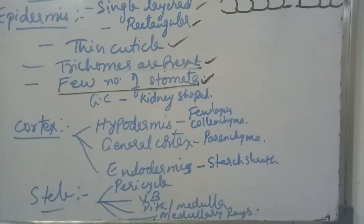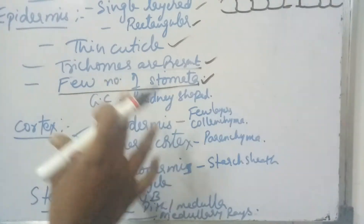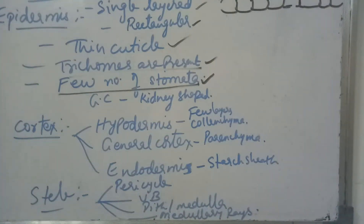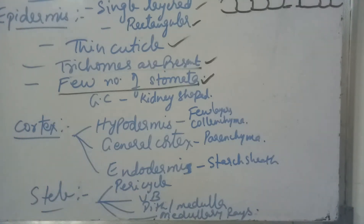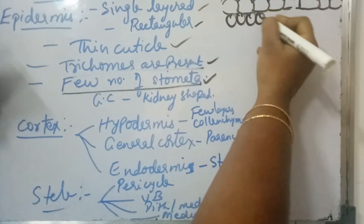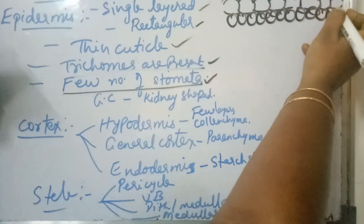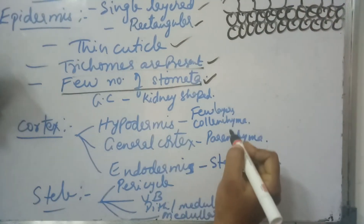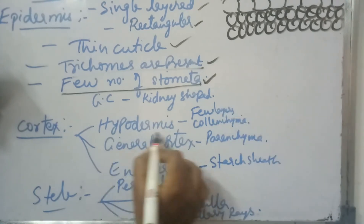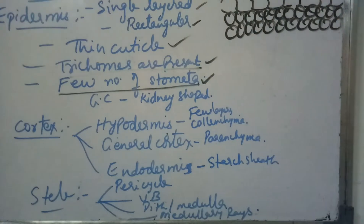Coming to cortex. In between epidermis and stele, the outermost layer is pericycle. In between epidermis and pericycle, the tissues present come under cortex. Cortex has three distinct zones: hypodermis, general cortex, and endodermis. Below the epidermis, few layers of compactly arranged collenchymatous hypodermis are present in dicot stems, providing mechanical support.